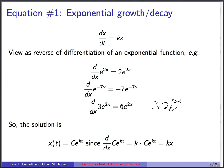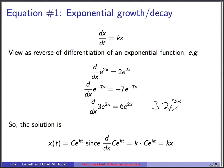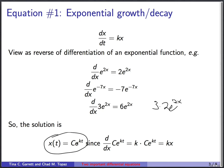These examples show that the solution is c times e to the kt, where c is an undetermined constant and k is the constant from the equation. To verify: d/dx of ce to the kt gives k times ce to the kt, which equals k times the original function. So d/dx of the function equals k times the function. This represents exponential growth if k is positive, or decay if k is negative.